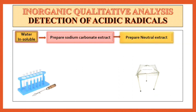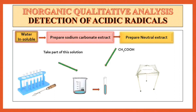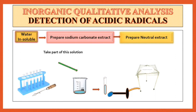Next step is the preparation of neutral extract. To prepare neutral extract, take a small portion of this sodium carbonate extract and to that add CH3COOH drop wise till it becomes acidic. Then boil it well. Now this is our neutral extract solution. We have to use sodium carbonate extract, neutral extract, or water solution for the detection of acidic radicals.